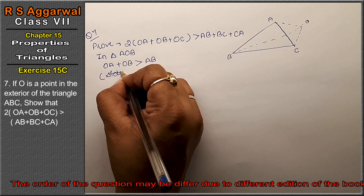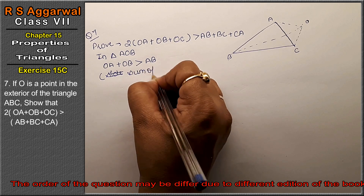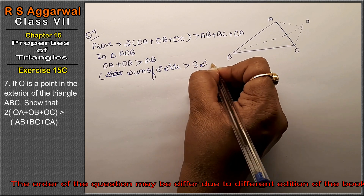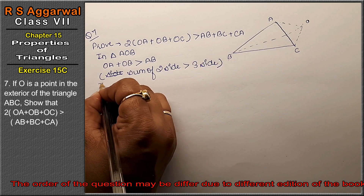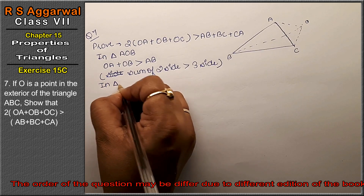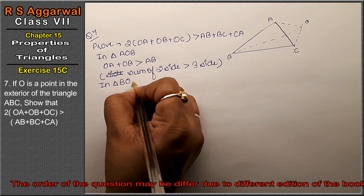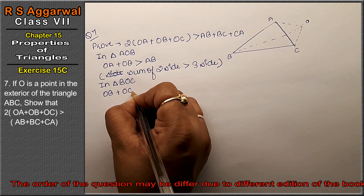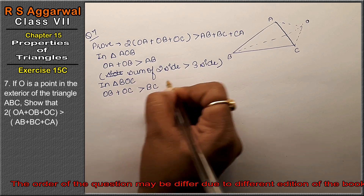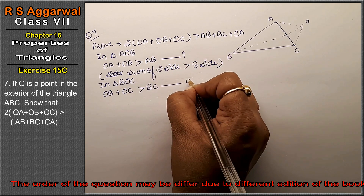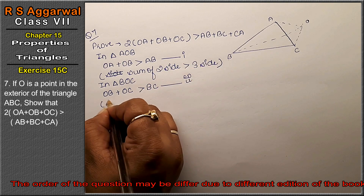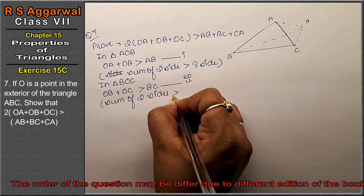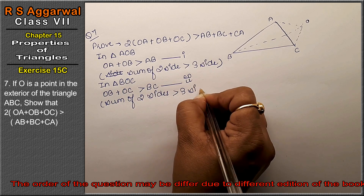In triangle OBC: OB plus OC is greater than BC. The reason is the same — the sum of two sides is greater than the third side. This is our second equation.